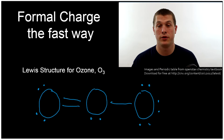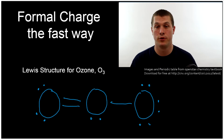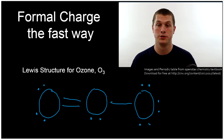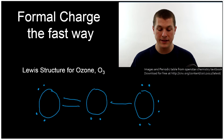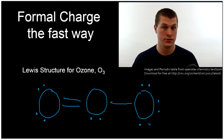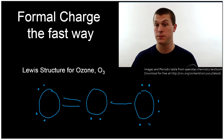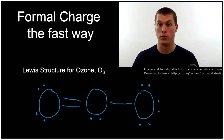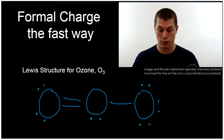Welcome to this episode of Real Chemistry. I'm Dr. Morris. Today we're going to be talking about formal charges. What's a formal charge? Basically, in our Lewis structures, if an atom has extra bonds — more bonds than it wants, or less bonds than it wants — it gets what's called a formal charge, that is, a non-zero charge.